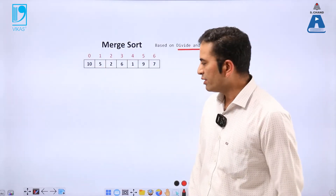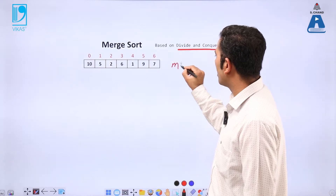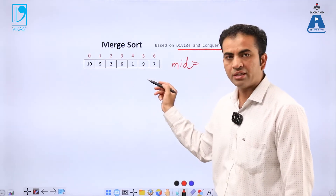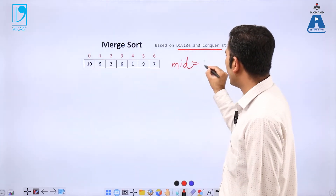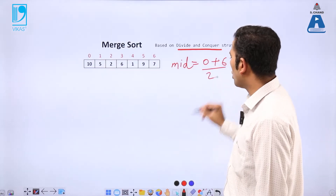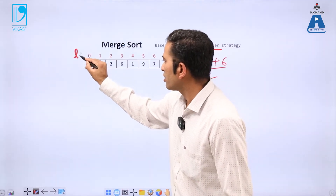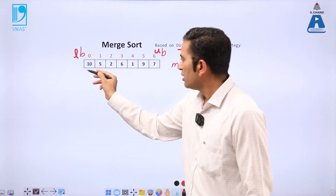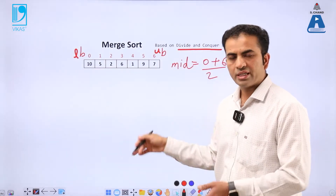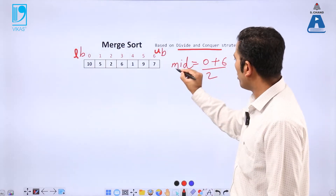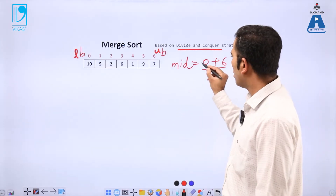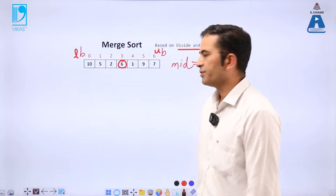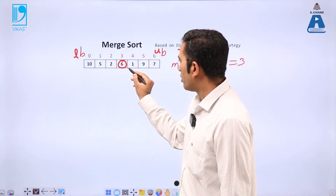First, we need to find the mid of this array. There are seven elements, from index zero to index six. The mid is calculated as (low + high) / 2, i.e., (0 + 6) / 2 = 3. So the third index is the middle point, and we divide the array at this midpoint.